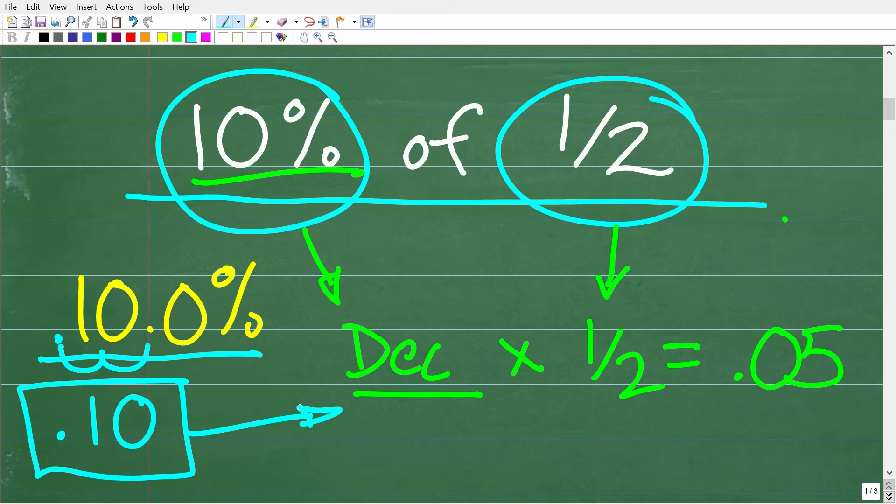But technically what's going on is that you're dividing this percent by 100. So a percent is actually a comparison, a fraction where the denominator is 100. Okay, so if we divide 10 by 100, it's the same thing as moving the decimal point over two places to the left.